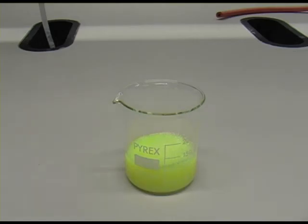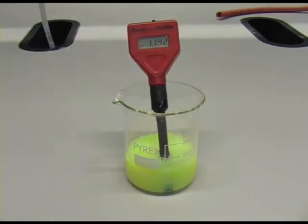This beaker contains a cleaning fluid. The pH meter shows us that this is an alkaline solution. We would consider this a weak alkali with a pH of about 11.